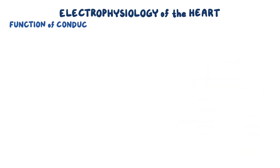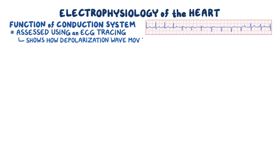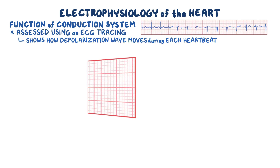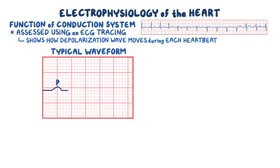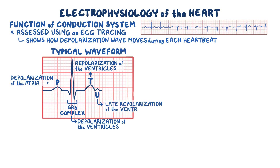The function of the heart's conduction system is typically assessed using an ECG tracing, which shows how the depolarization wave moves during each heartbeat. In a typical waveform, there's a P wave, which represents the depolarization of the atria; a QRS complex, which represents depolarization of the ventricles; and a T wave, which represents the repolarization of the ventricles. Sometimes, immediately after the T wave, there's a U wave, which represents late repolarization of the ventricles.